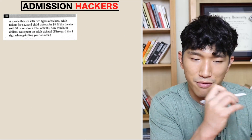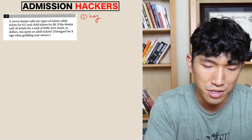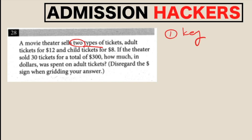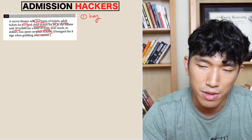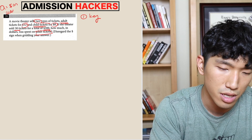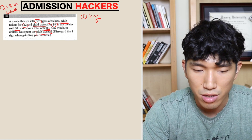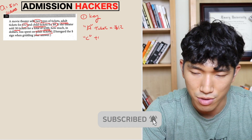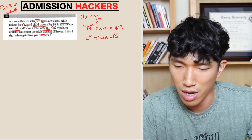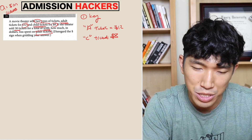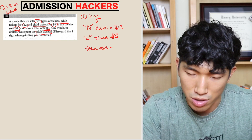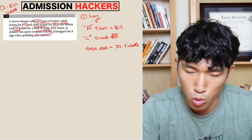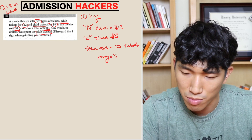Let's go to the second example — it's similar to the first one. A movie theater sells two types of tickets: adult tickets at $12 and child tickets at $8. If the theater sold 30 tickets for a total of $300, how much in dollars was spent on adult tickets? So what we're looking for is: money spent on adults. Key information: adult ticket = $12, child ticket = $8, total tickets sold = 30, total revenue = $300.